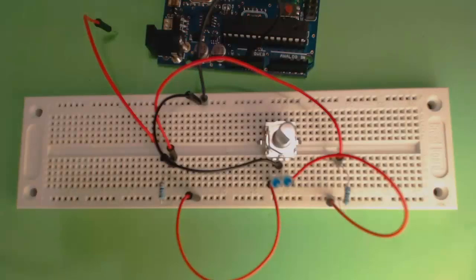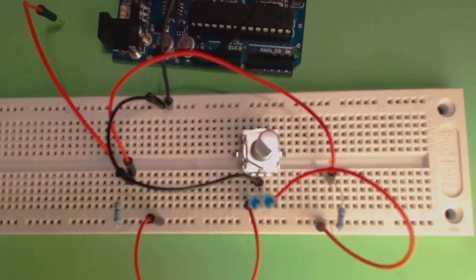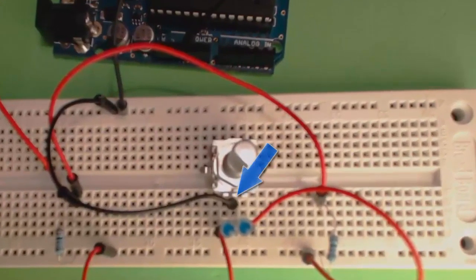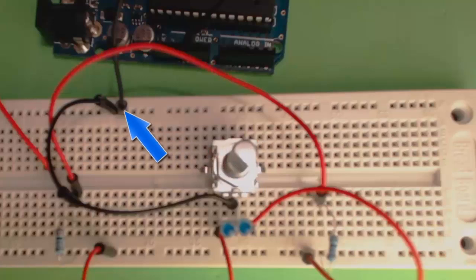I've wired up a little breadboard demo here to show you how the encoder works. Let's take a quick look at the wiring. The common pin here on the encoder is connected to ground on the Arduino. We're not running any program on the Arduino right now. We're just using it as a power source.